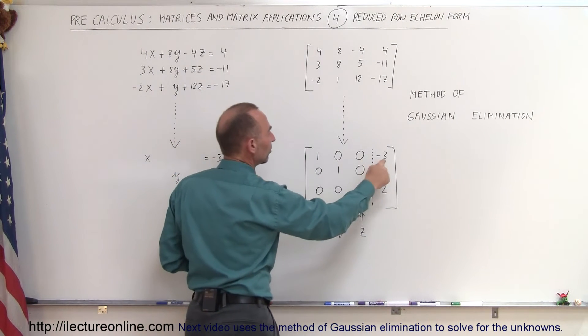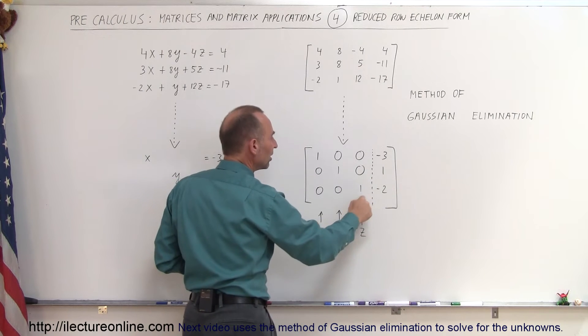Here it says 1X equals negative 3, 1Y equals 1, and 1Z equals negative 2.